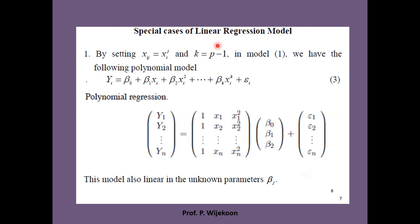Now we consider some special cases of the linear regression model. By setting xij equals to xij to the power j and k equals p minus 1, we can obtain this polynomial model. Note that this model is also linear in the unknown parameters beta. Therefore, this model also can be taken as a linear regression model.